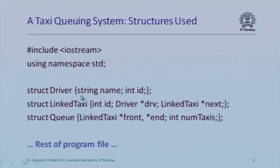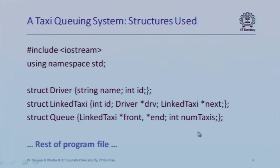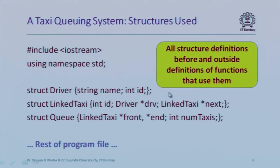Here are the structures: driver (same as before, but using the string data type instead of a character array for convenience), link_taxi (same as before — with a pointer to the next taxi), and a new queue structure that has a pointer to the front, a pointer to the end, and a count of the number of taxis. We need both front and end pointers because we dispatch from the front and add new taxis at the end. All structure definitions appear before the functions that use them.